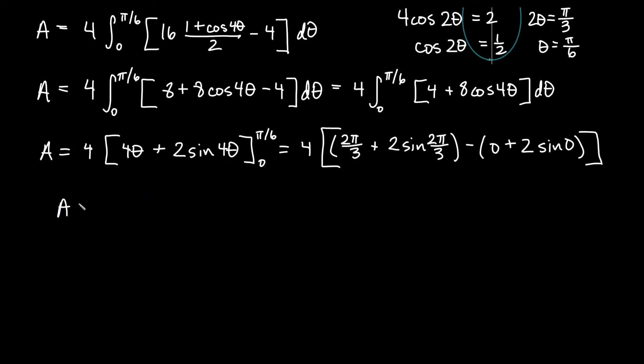So our area is going to equal 4 times 2 pi over 3 plus 2 times what is sine of 2 pi over 3. Sine of 2 pi over 3 is root 3 over 2. And if I go ahead and do some simplifying there, I'll get 4 times 2 pi over 3 plus root 3.